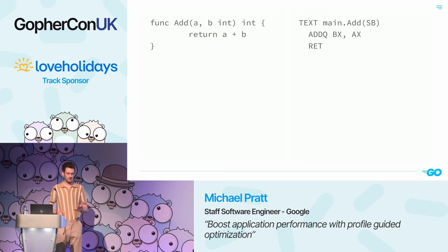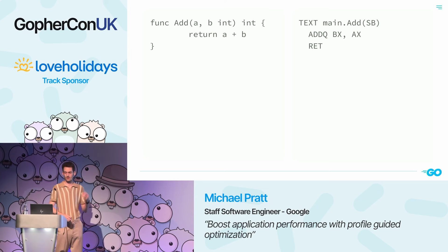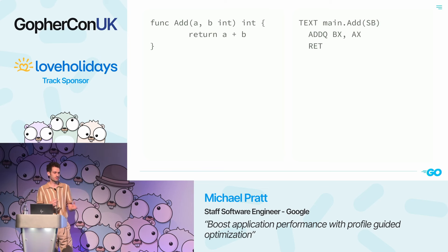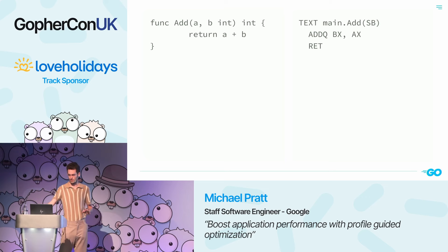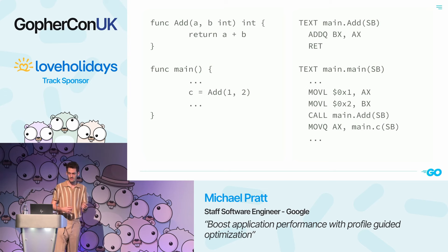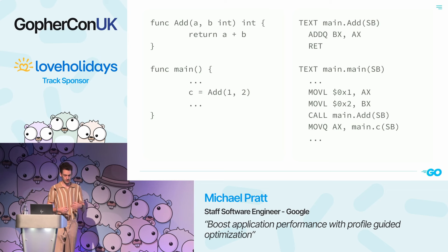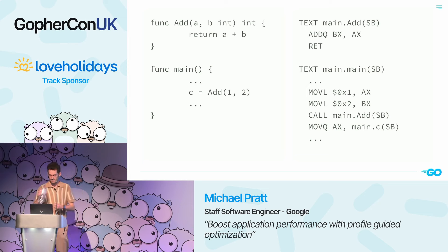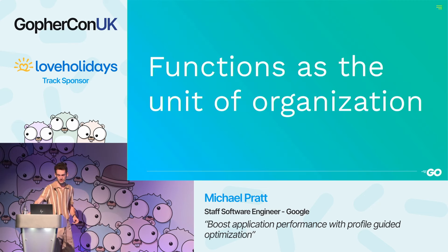Don't worry if you aren't familiar with reading assembly — this talk will keep it light. On the left we have a trivial addition function in Go, and on the right we can see the resulting assembly code for amd64. It has an ADDQ instruction to add the values of two registers together, and a RET instruction to return to the caller. In context, calling the add function from main moves arguments into registers, uses a CALL instruction, then moves the result into the destination for c.